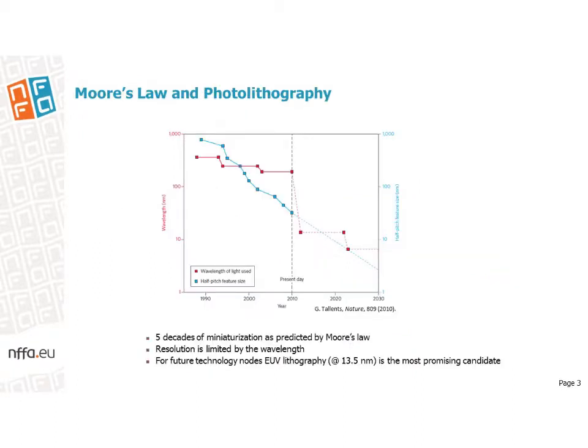For the last five decades, Moore's law has been driving the miniaturization of semiconductor devices that transformed our daily life. According to this law, the number of transistors per unit area should double every two years. This progress was only possible through steady advancements in photolithography.